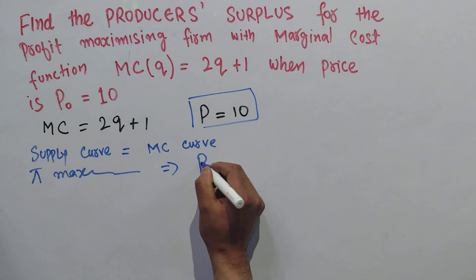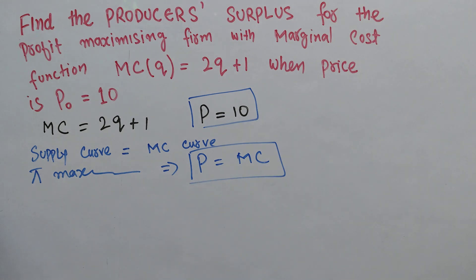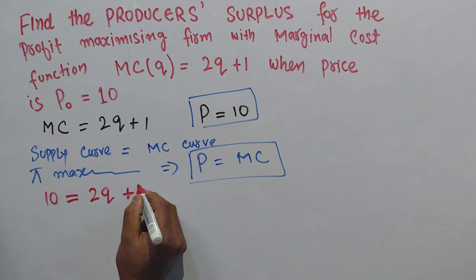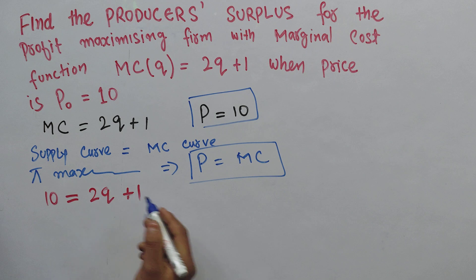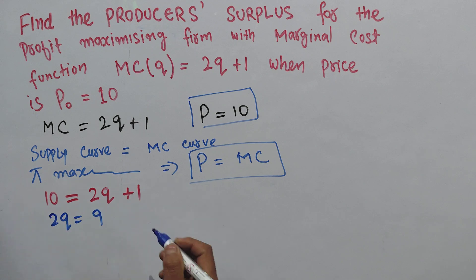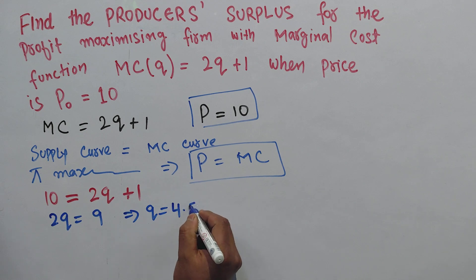So that means if we write it here, P is 10 and marginal cost is 2Q + 1. Let us solve this for Q. We will get 2Q = 9, which implies Q = 9/2 = 4.5. If I draw the graph, that will make more sense.